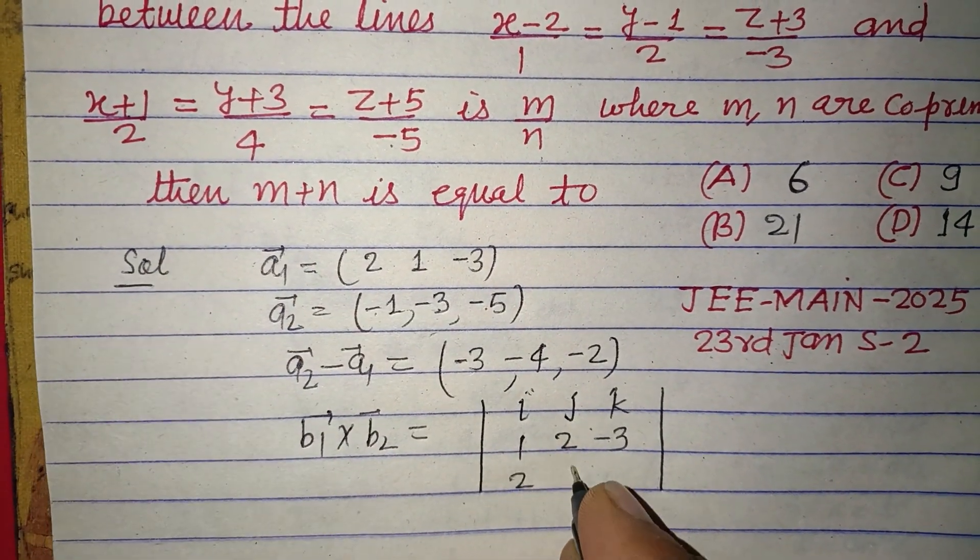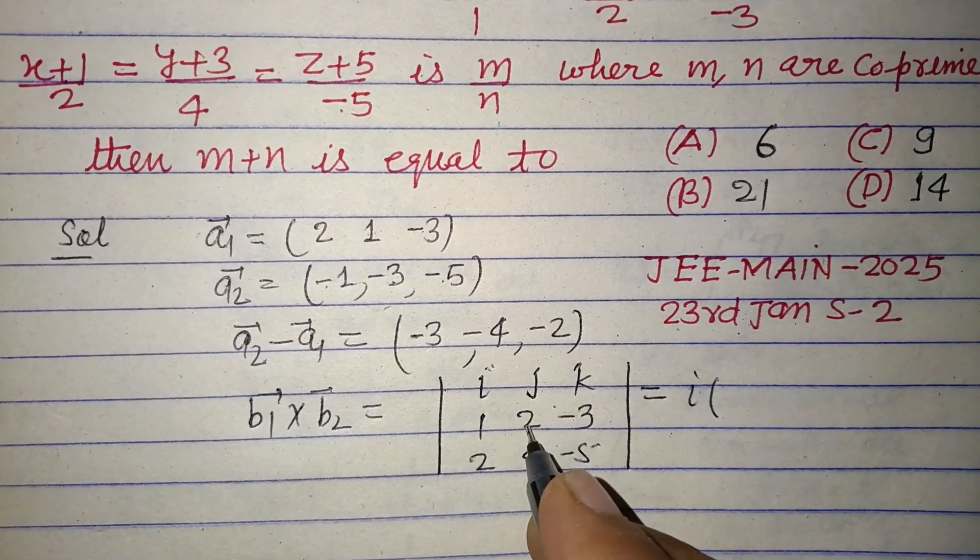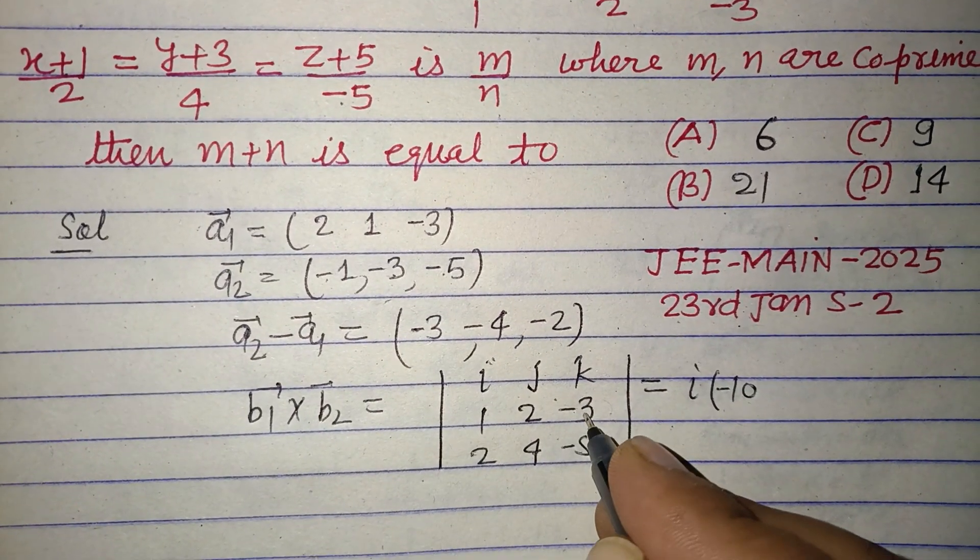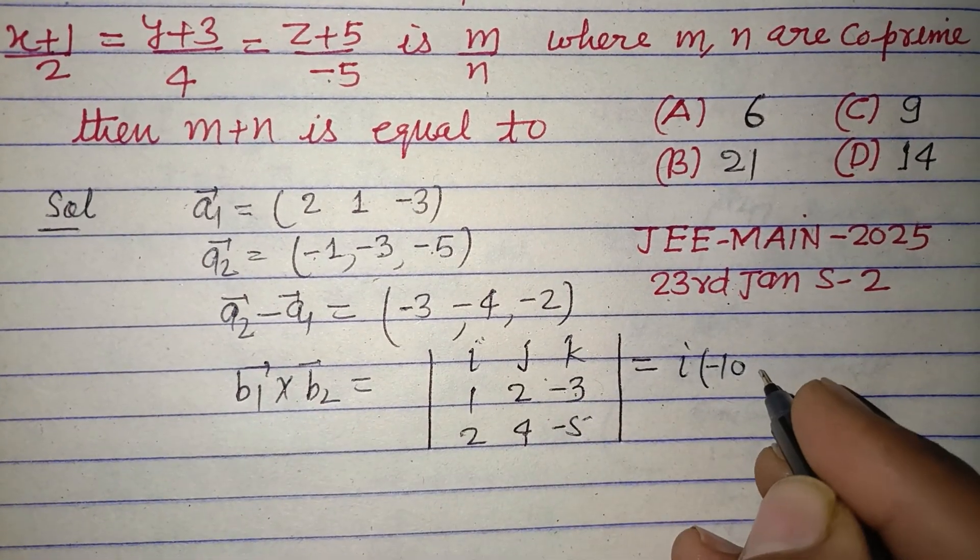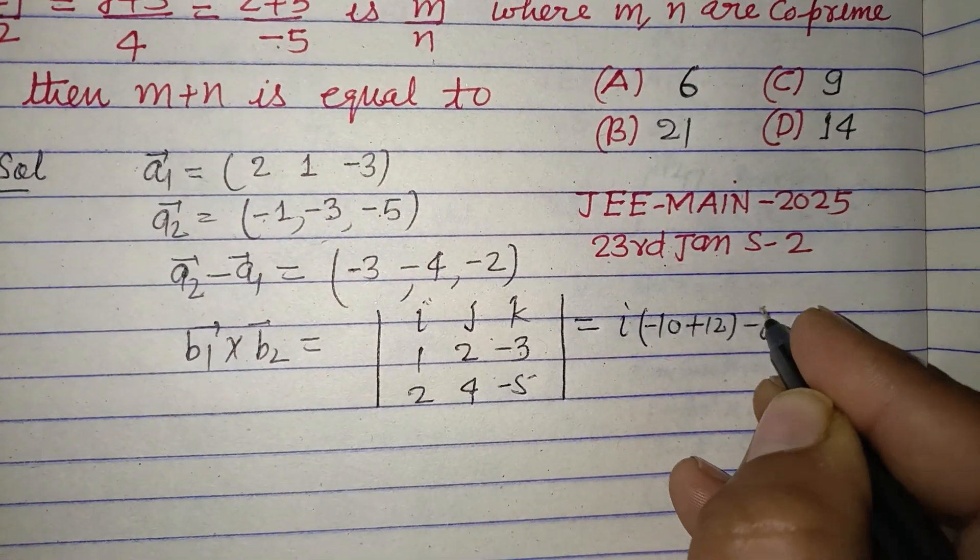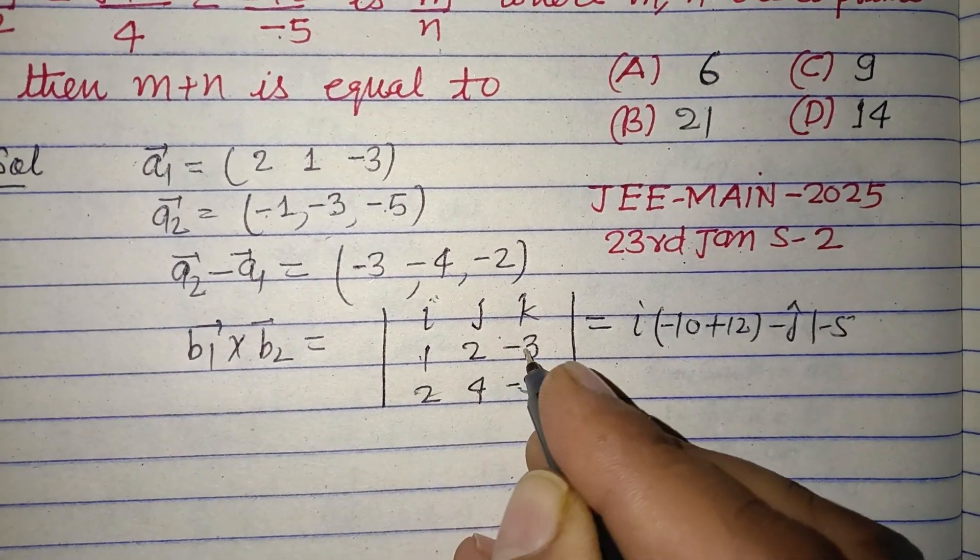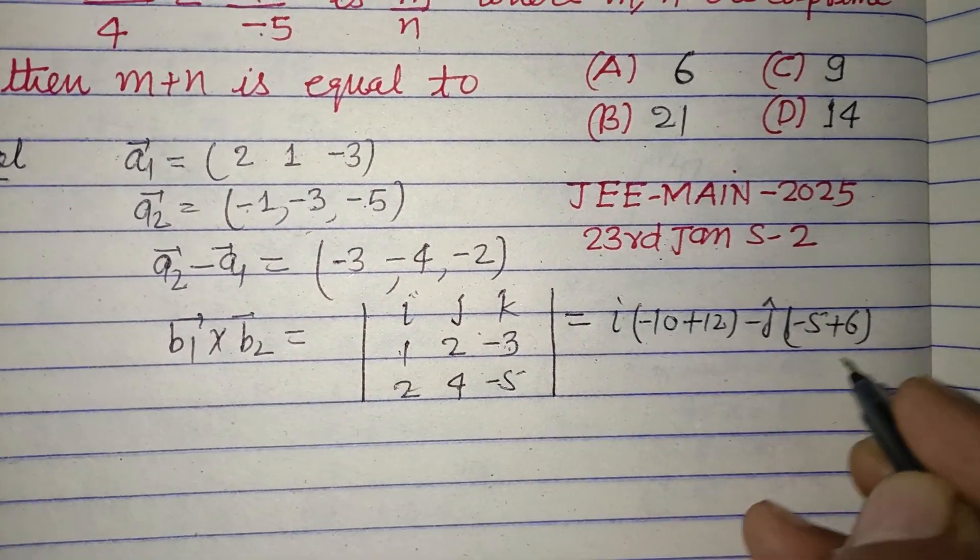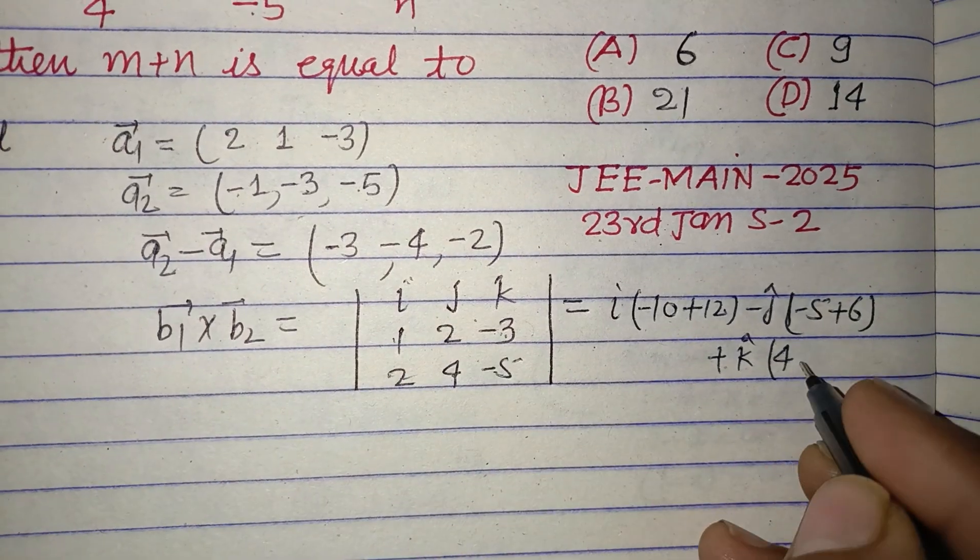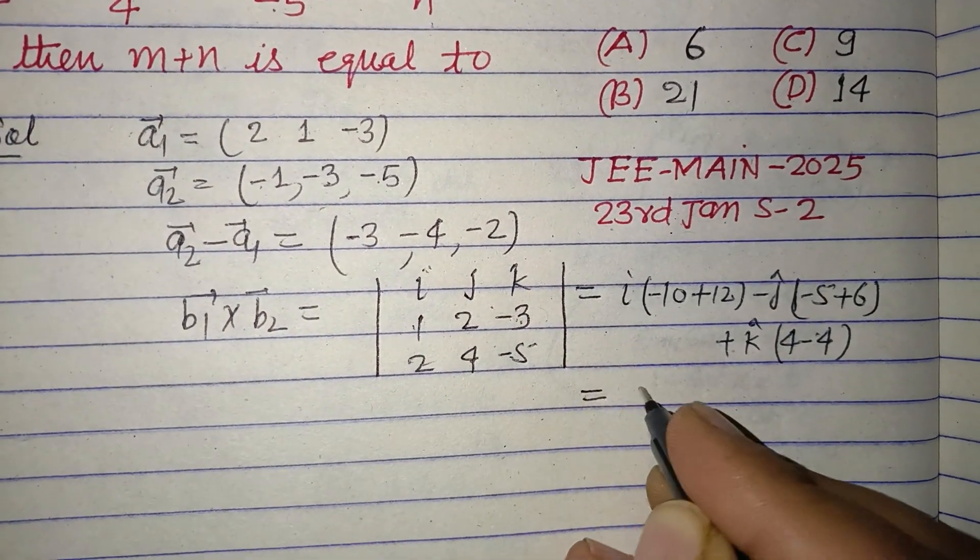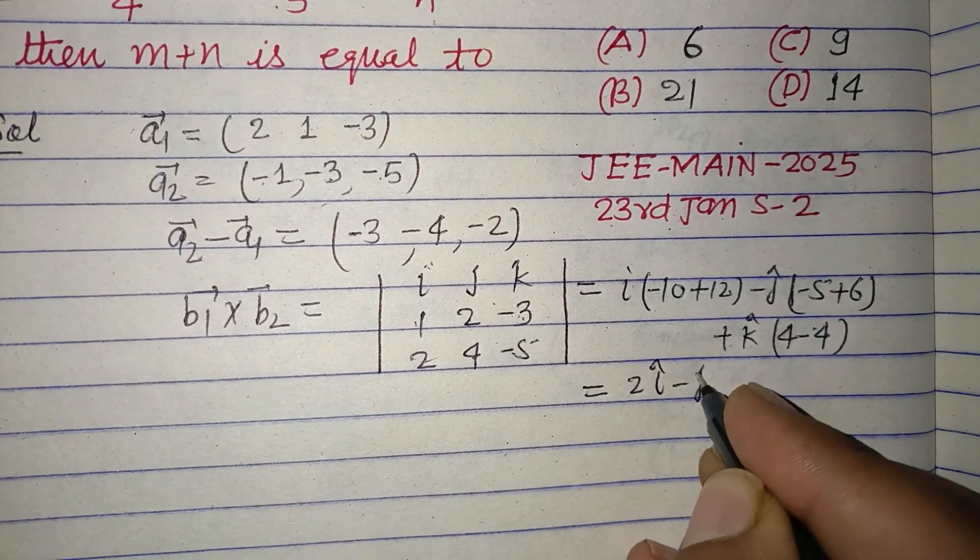Opening this: i times (-10 plus 12), minus j times (-5 plus 6), plus k times (4 minus 4). So we get 2i cap minus j cap plus 0k cap.